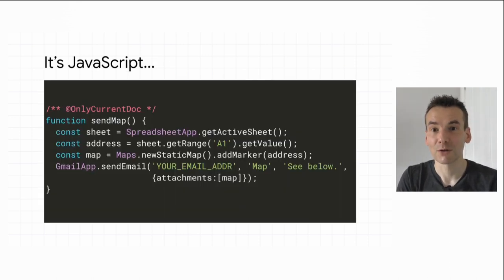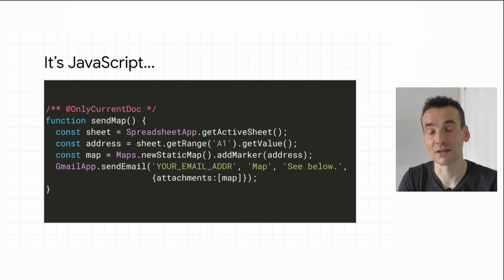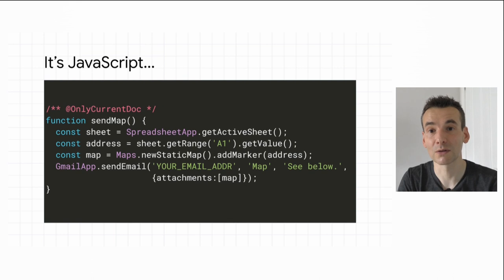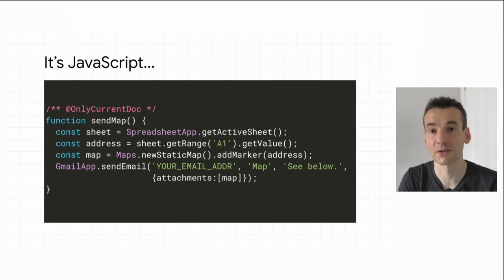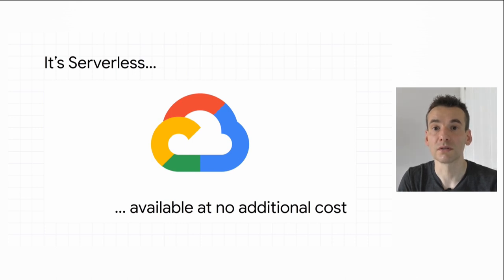A couple of affordances of Google Apps Script: in terms of coding syntax, it's actually written in JavaScript. Up until recently we were stuck on an older version of JavaScript, but now it uses the Chrome runtime, so we have access to all the latest JavaScript syntax. That means if you get stuck processing data within Google Apps Script, you can go to Stack Overflow and find lots of solutions for parsing arrays and things like that. It's also serverless — it sits on Google's infrastructure so you don't need to worry about updating or maintaining libraries. And it's available at no additional cost, so if you're a G Suite user, you have access to Google Apps Script today.